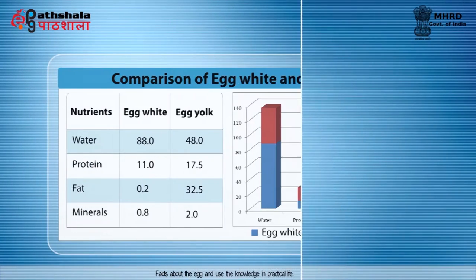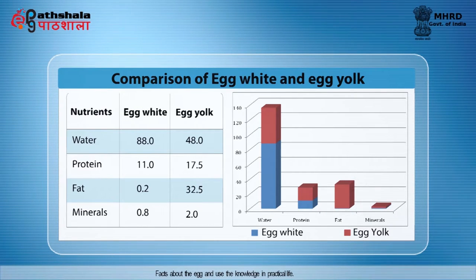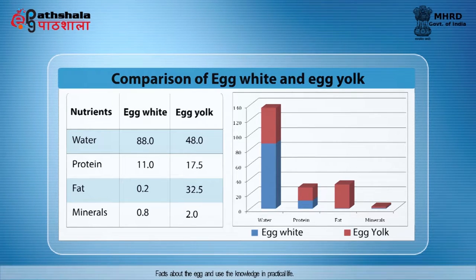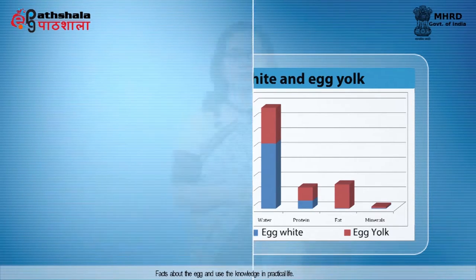The composition of egg white and yolk differs drastically. Protein in egg white is 11% as compared to yolk which is 17.5%. Presence of fat is only 0.2% in white whereas 35.2% in yolk, which is quite high. Egg white is 88% water and yolk is only 48% water. The main nutrient present in egg is protein.